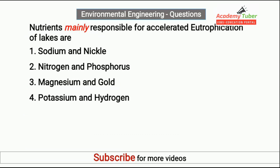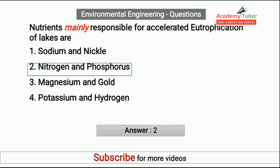Nutrients mainly responsible for accelerated eutrophication of lakes are? Answer is Nitrogen and Phosphorus.